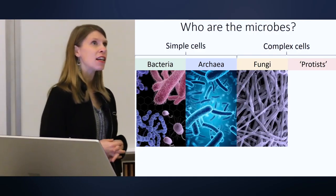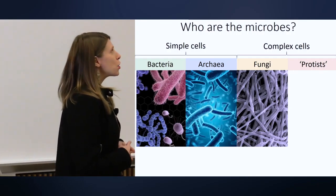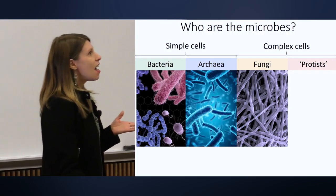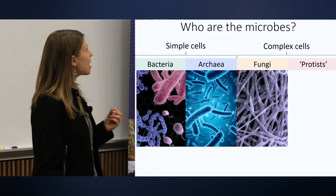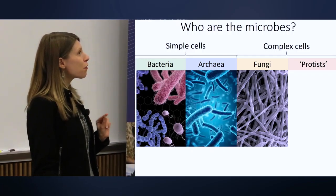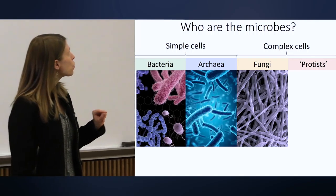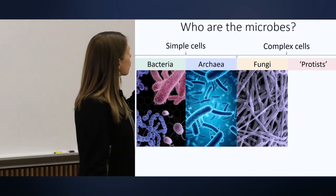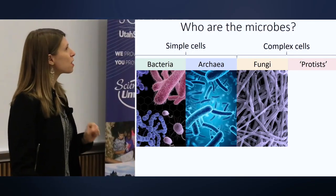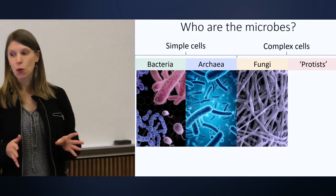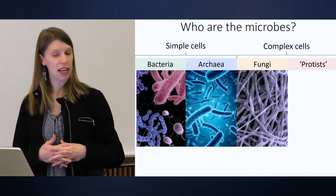How many of you have eaten a mushroom before? A mushroom is a kind of fungus — one that is macroscopic, so you can see it with your eye. But most fungi are microbes; they are invisible. If we look at them under the microscope, their cells sort of look like little strands of spaghetti. They live in soil, in the bodies of animals, and all different environments.